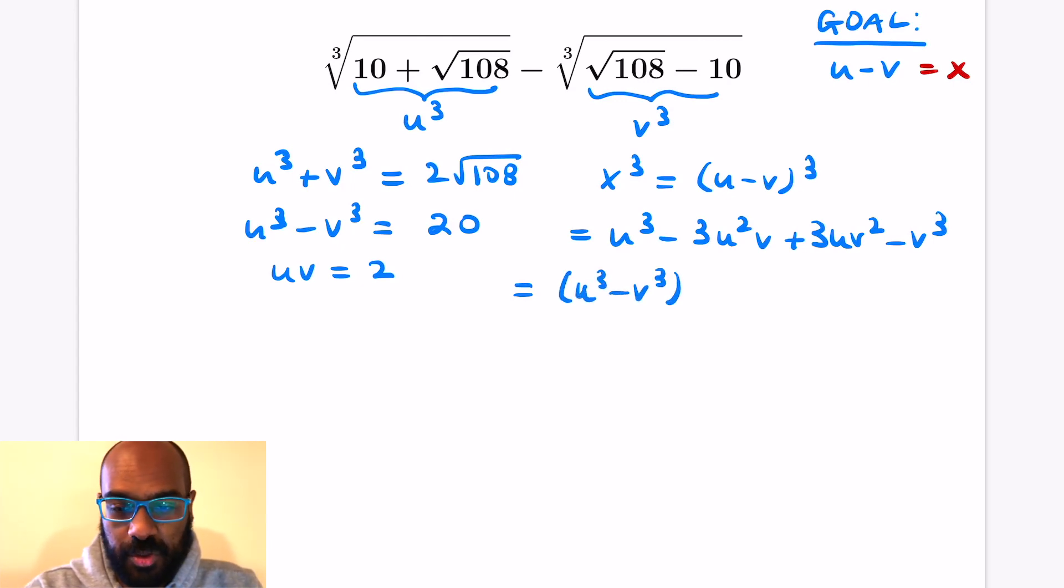We have u cubed minus v cubed, that's 20. And then what we're left with has a common factor of negative 3uv, and then the rest is u minus v, which happens to be x itself. So u cubed minus v cubed is 20 and then uv itself is 2. We figured that out earlier.